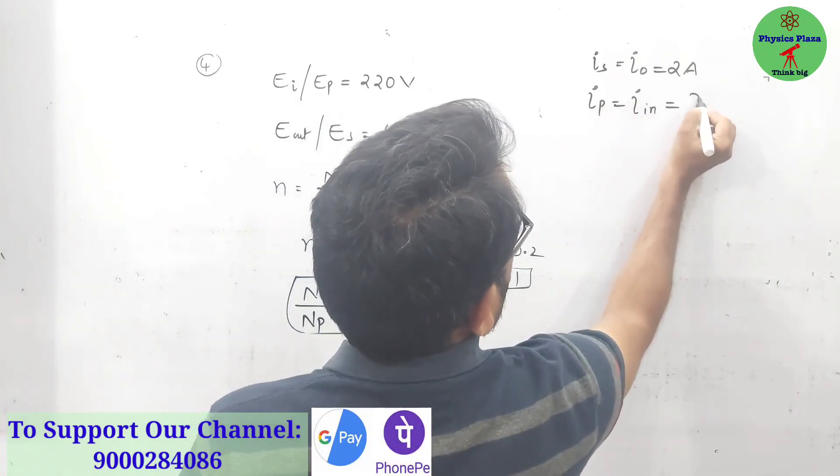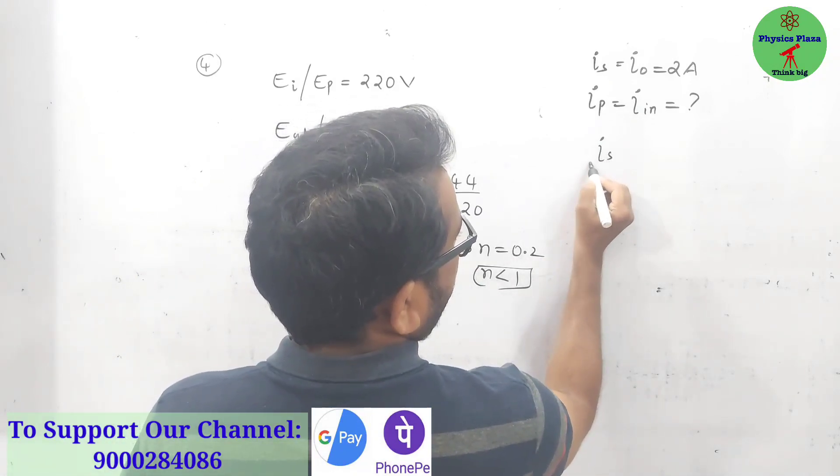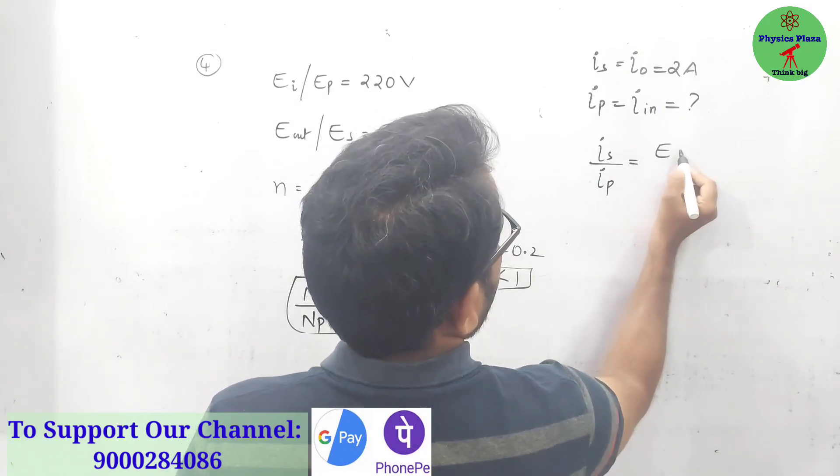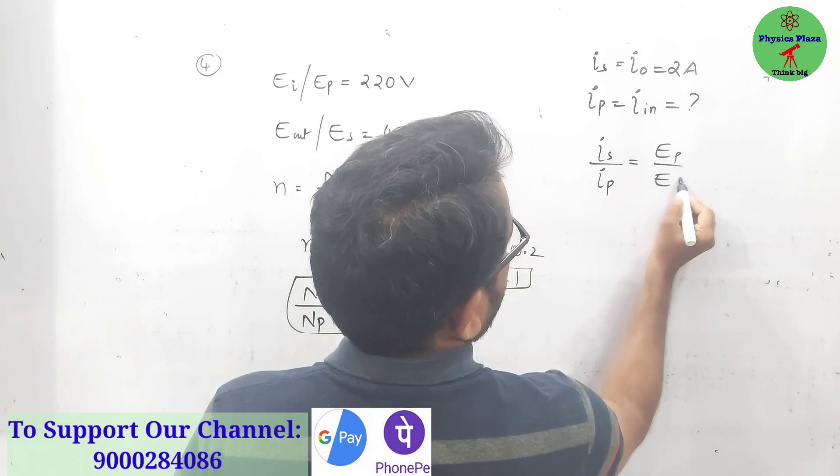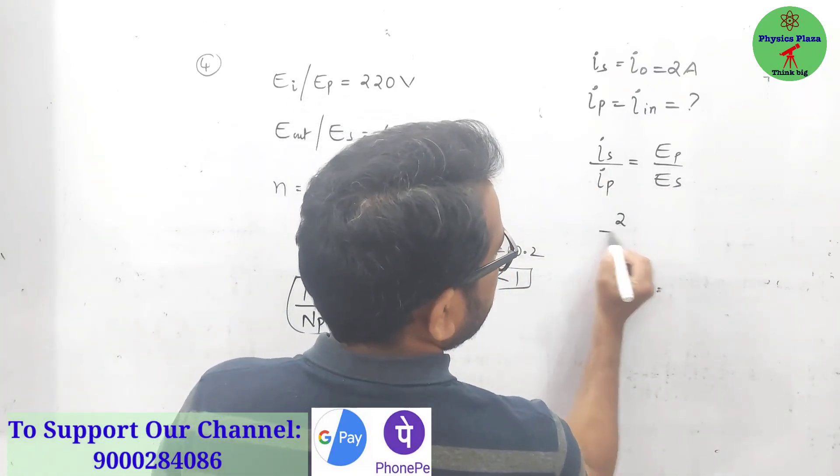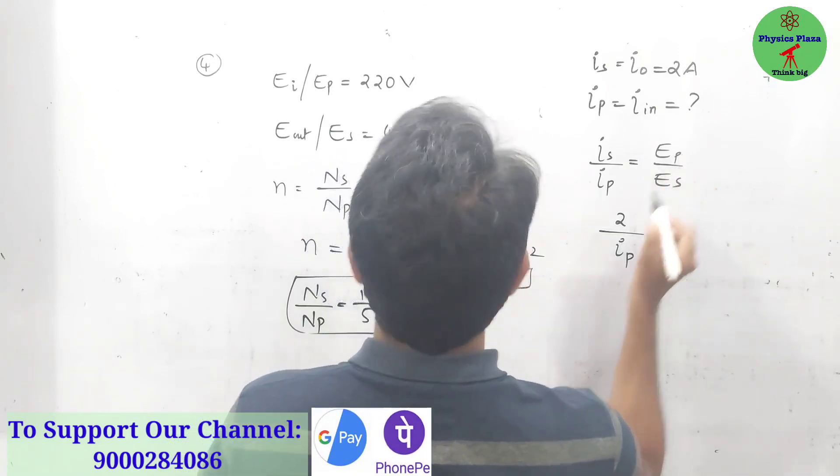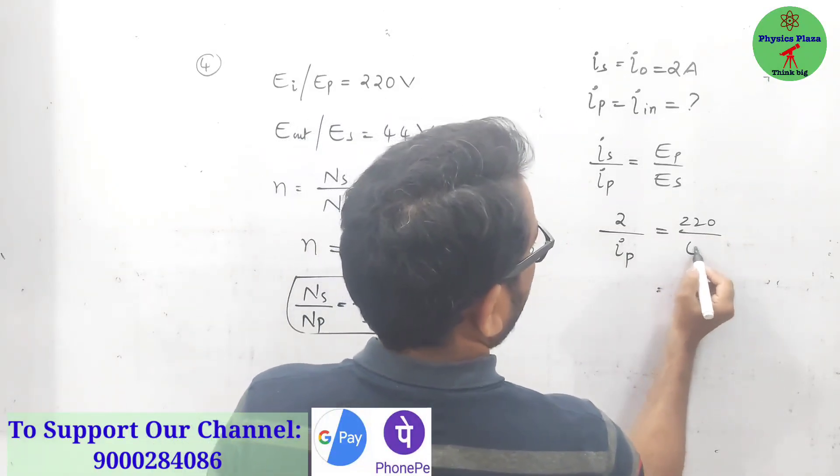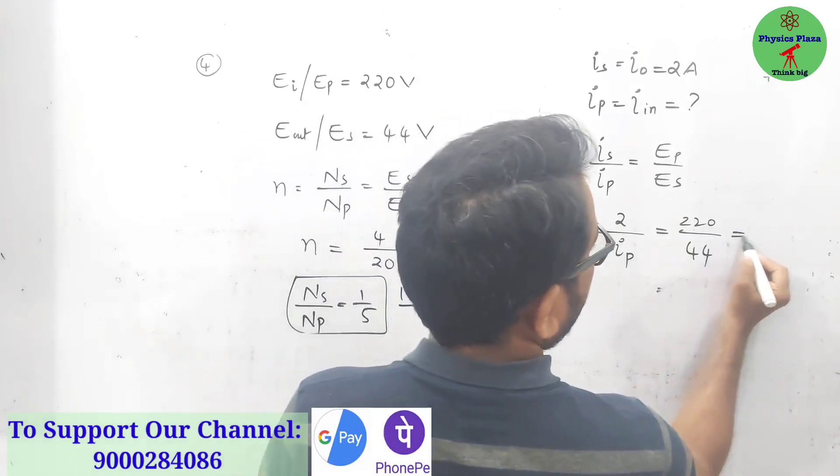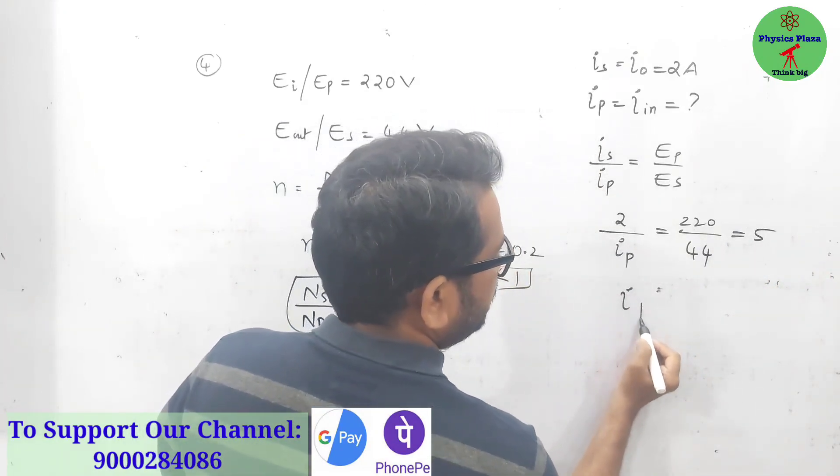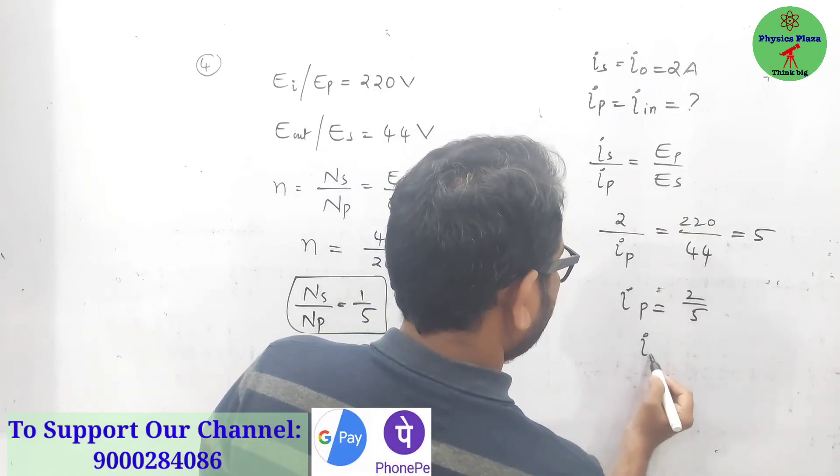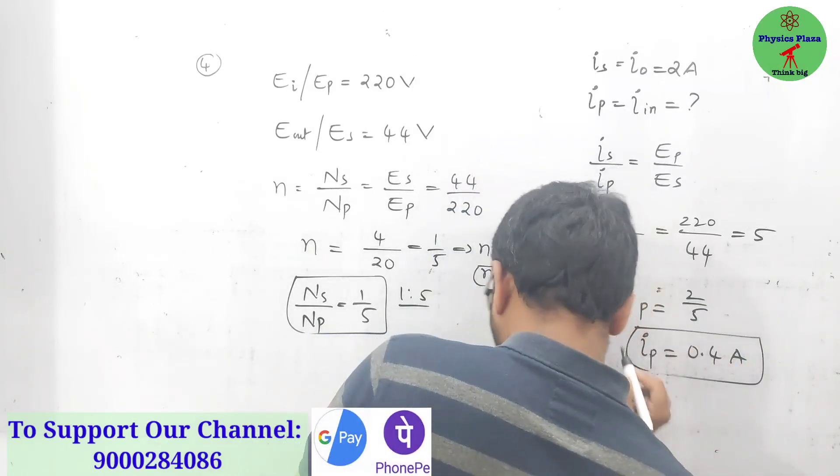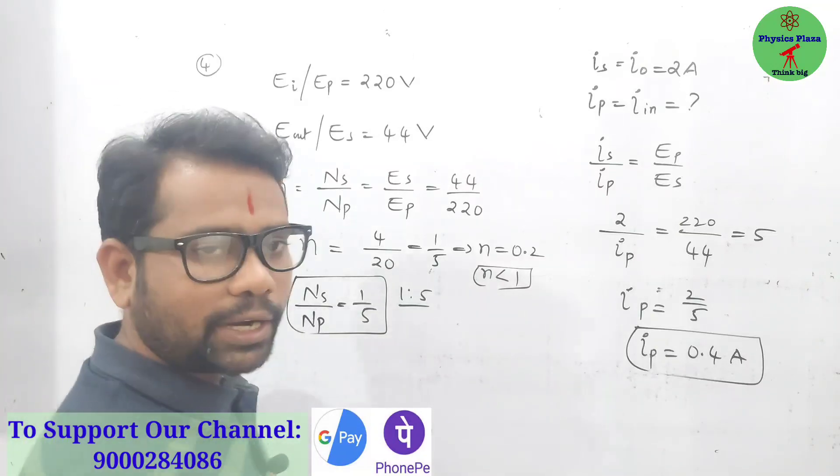We have a relation: Is/Ip = Ep/Es. Secondary coil current is given as 2 ampere by current in the primary coil, which will be Ep is 220 volt, Es is 44. So this is going to be 5. So Ip = 2/5. Current in the primary coil is 0.4 ampere.